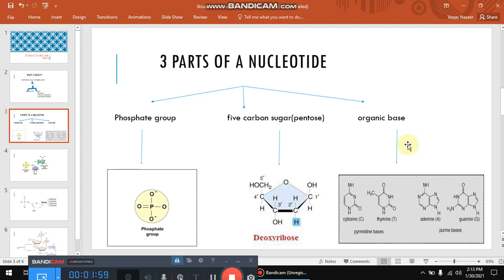Third part is the organic base. There are four types of organic bases: cytosine, thymine, adenine, and guanine. At one time, nucleotide possesses only one type of organic base.